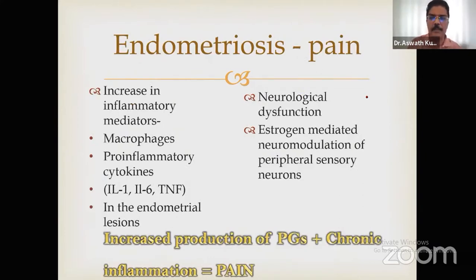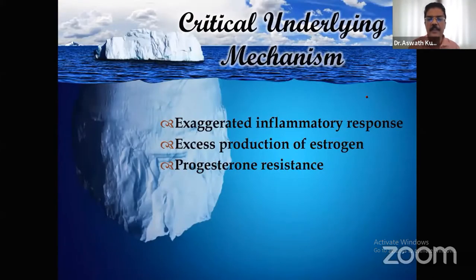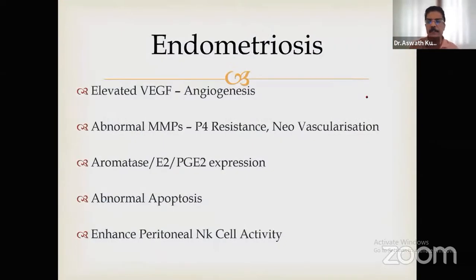Why is there pain? Pain is the main presentation of endometriosis — either pain or infertility. The reason for pain is increased inflammatory mediators like macrophages, pro-inflammatory interleukins, TNF-alpha in endometrial lesions. In summary, there is increased production of prostaglandins plus chronic inflammation, with an exaggerated inflammatory response and excess production of estrogen alongside progesterone resistance.